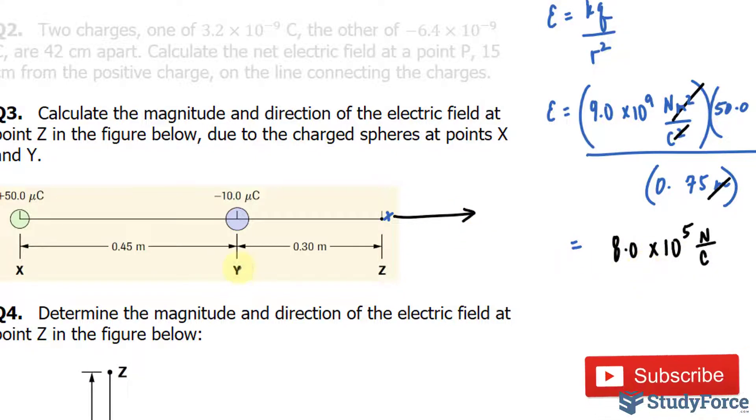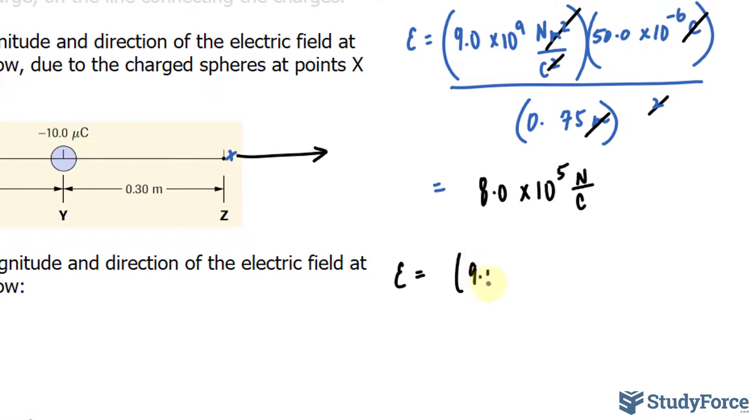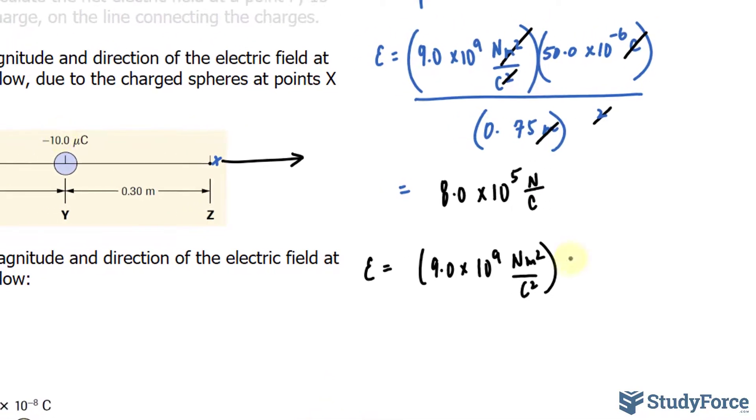Now for y, we will do the same thing. We'll calculate the electric field. So I'll repeat most of the calculation from above. Notice that this is negative 10.0. We're not interested in whether it's negative or positive. This is the magnitude of the electric field. So I'll write down positive 10.0 times 10 to the power of negative 6 coulombs.